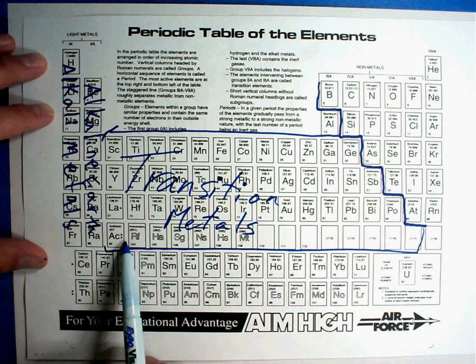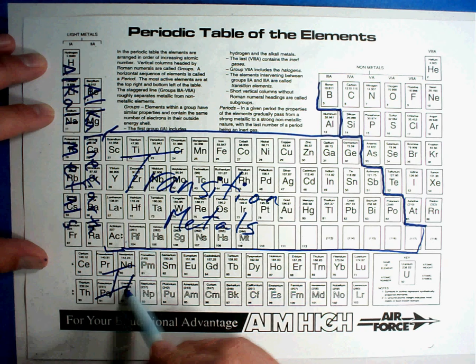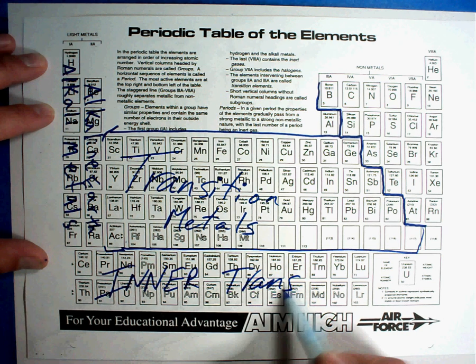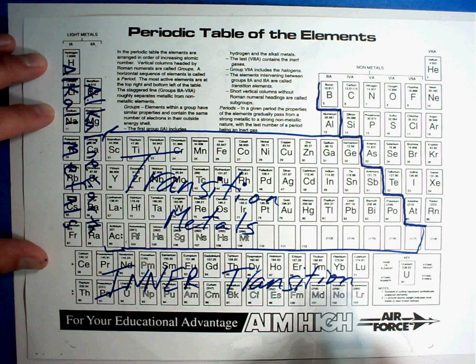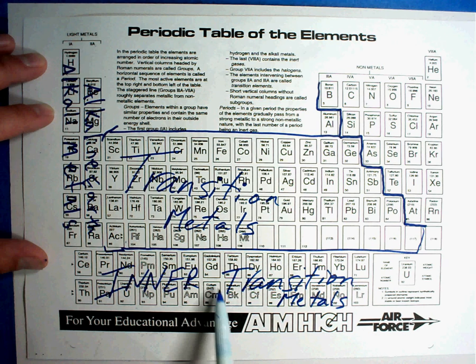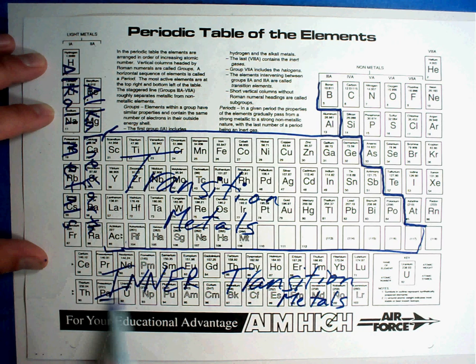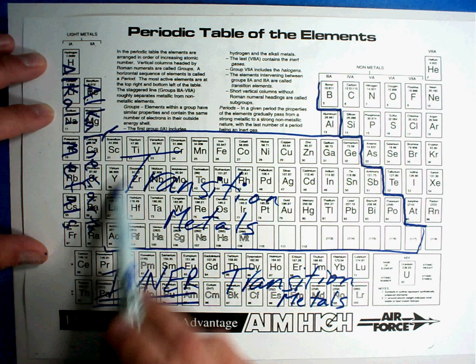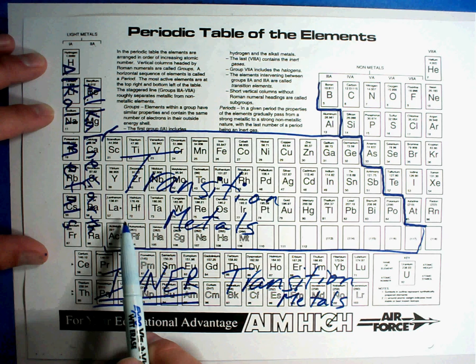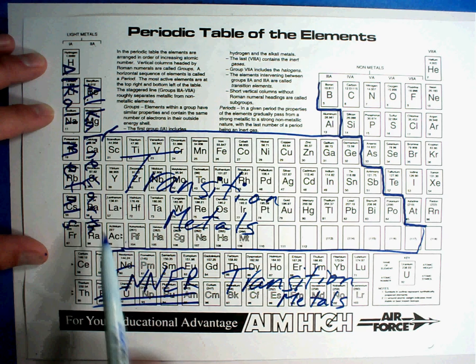These are what are called the inner transition metals. You'll notice that every time I'm using the word metals, these are all metals in the world. As scientists have found them throughout time, they fit into the transition metals. That makes it really easy to understand the word inner transition metals. So we have the transition metals in the middle. There's a lot of those. The inner transition metals would fit inside. But rather than cutting the chart and pushing it further out, they just put them on the bottom as a reference.